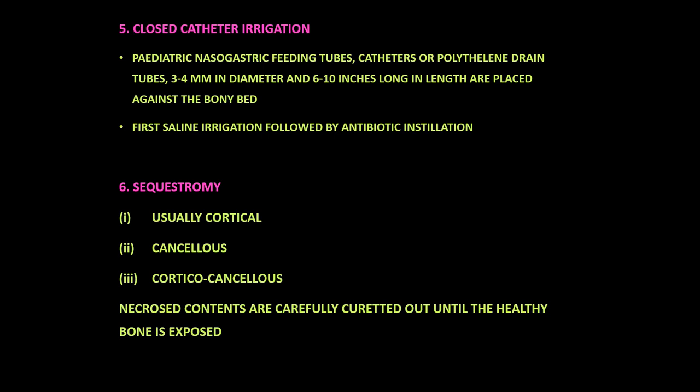After decortication, two small tubes are placed against the bony bed through separate skin incisions and secured with sutures. One tube is connected to low-pressure suction to allow drainage of pus, and the other provides a route for installation of local antibiotics. Daily saline irrigation is performed followed by antibiotic instillation, repeated until negative cultures are obtained. Systemic antibiotics are continued for at least two to three months following cessation of clinical evidence of disease.